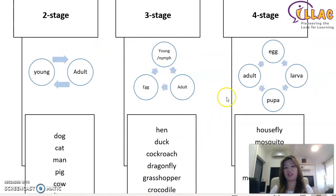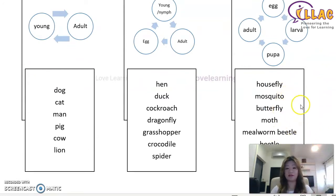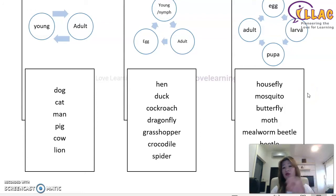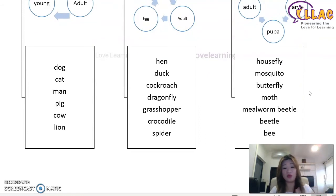The four-stage life cycle goes from egg to larva to pupa to adult. Common examples are mosquitoes, housefly, butterfly, moth, mealworm, beetle, and bee. These animals are listed because they are commonly used in test paper questions, so it's good to know what stages they go through in their life cycle.